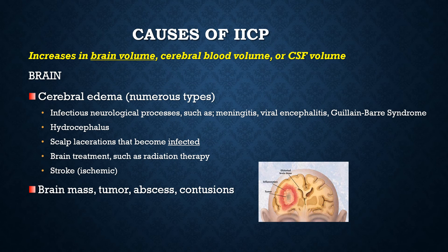Now that we understand ICP and why it's important, let's look at some examples of what would cause ICP to increase. It can be easiest to categorize these by the three elements in the cranial vault — the brain, blood, and CSF. Looking at the brain first, different types of cerebral edema can increase ICP. Common causes include hydrocephalus, head injuries, or different types of infections. Other trauma to the brain such as radiation therapy or stroke can cause inflammation and edema. Additionally, brain tumors, masses, and contusions will cause the brain volume to increase and thus increase ICP.